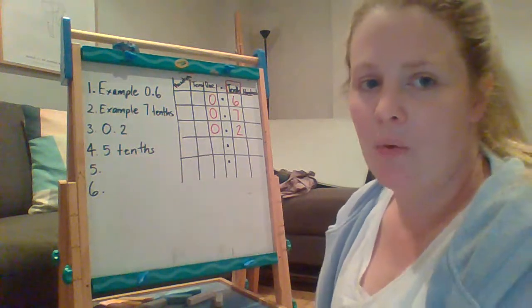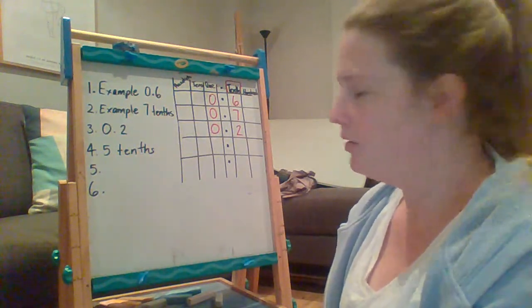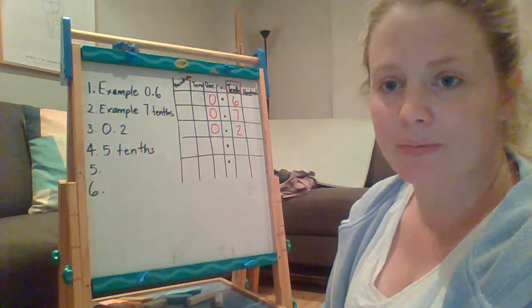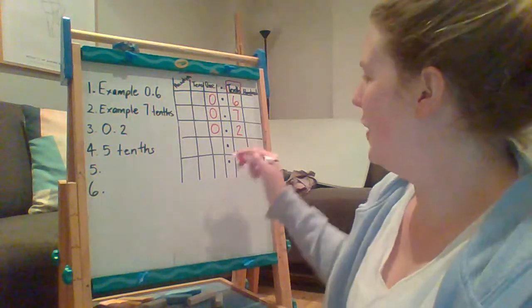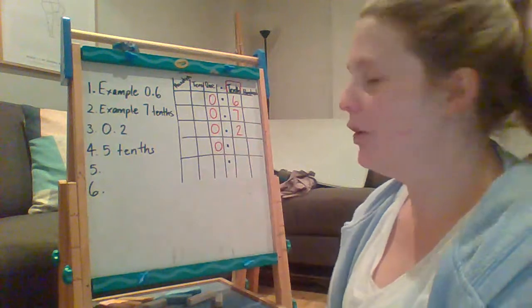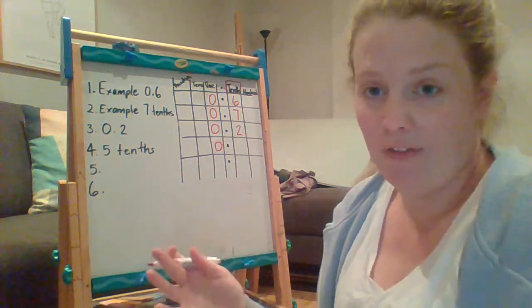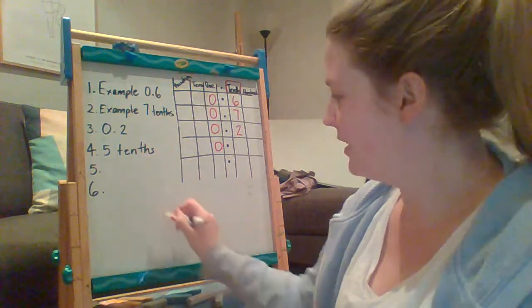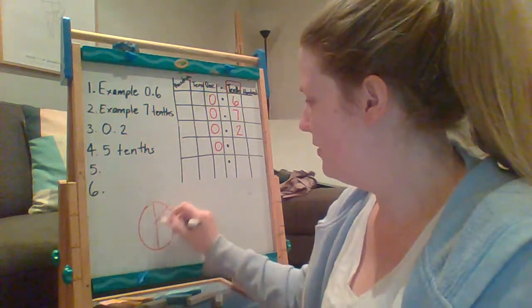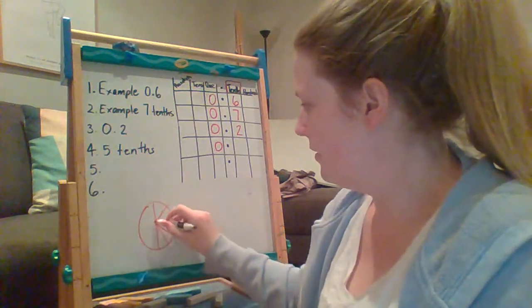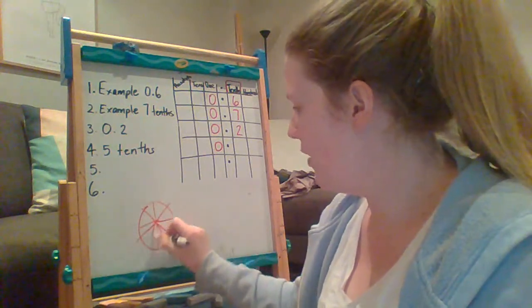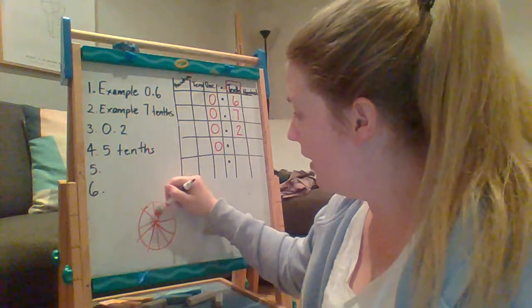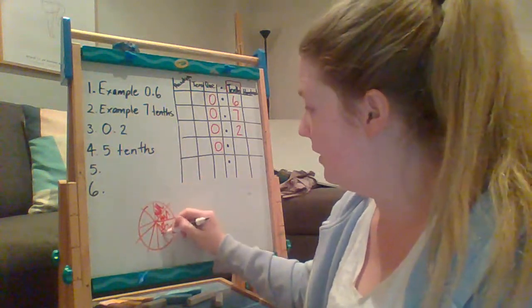Five tenths. What would I do to show five tenths as a decimal? So I'd need a zero in the ones column, because I don't have a whole number. I only have part of a number, just like in our pie or pizza, or cake, however you want to do it. I've only got part of a whole pie.